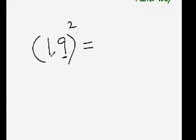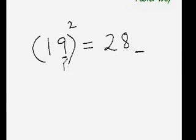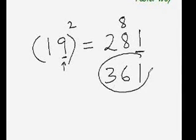One more place to go, so find the square of 9. 9 square is 81, 28 plus 8 is 36, so the answer is 361.